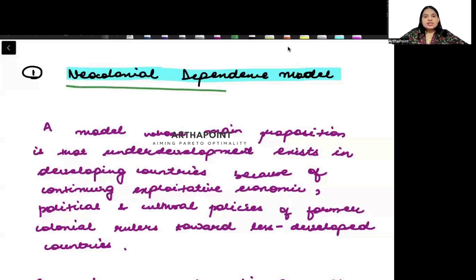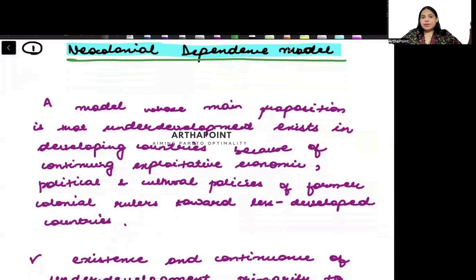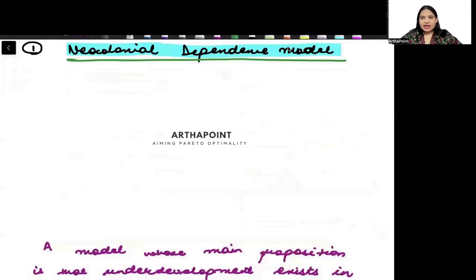The neoclassical dependence model extends the dependence theory further. It says there is a center, also called the core, and there is a periphery.